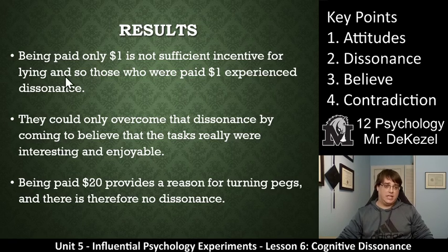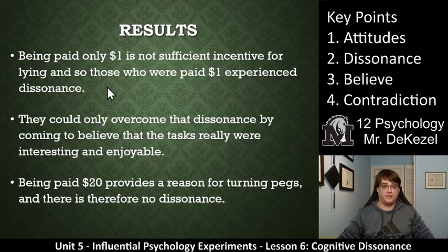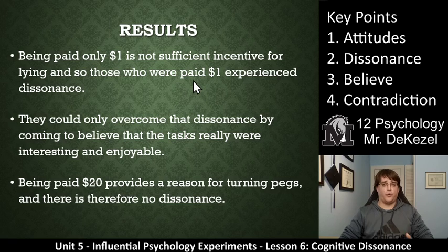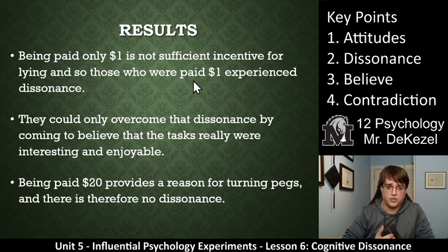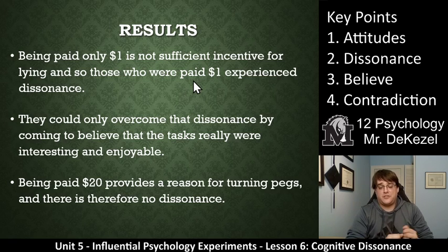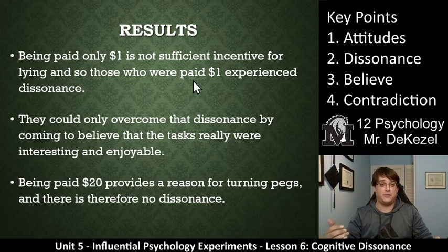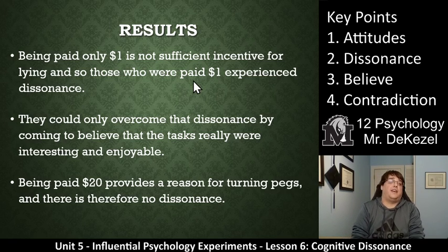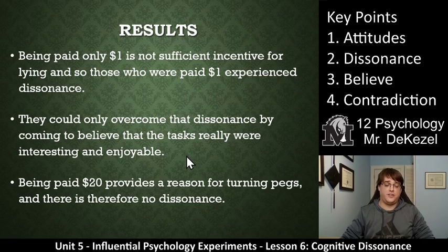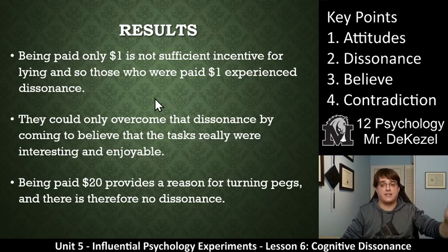So the results: being paid only $1 is not sufficient incentive for lying, and so those who were paid $1 experienced dissonance. They could only overcome that mental discomfort by actually believing that the task was interesting and enjoyable. Being paid $20 gives a person a reason to turn pegs; therefore, there's no reason for them to make up a reason that it was enjoyable. They had an external justification. The only justification people paid $1 could come up with was that the task was actually fun — and they rated the task more enjoyable.